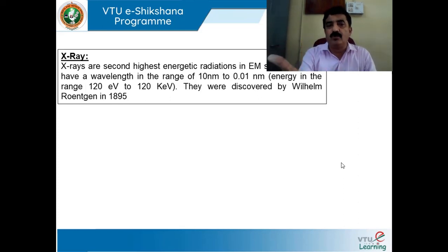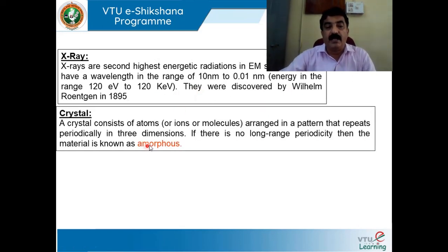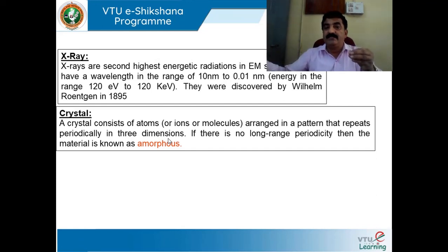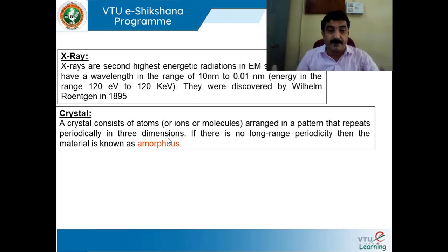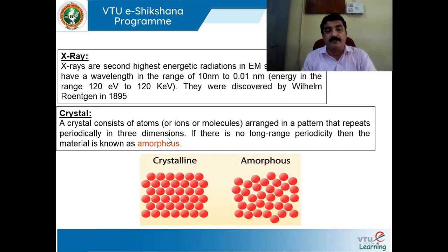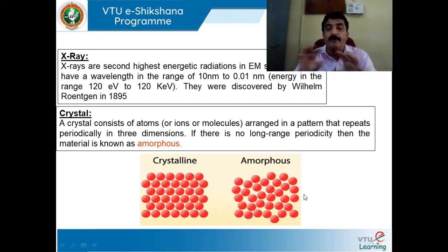First, a brief explanation of X-ray: X-ray is the second highest energetic radiation, with wavelength in the range of 10 nanometers to 0.01 nanometers. They were discovered in 1895 by William Röntgen. Regarding crystals: a crystal consists of atoms arranged in a particular pattern that repeats periodically in three dimensions — along x, y, and z axes. If this periodicity exists, it is a crystal; if there is no periodicity, it is amorphous. In the crystalline diagram, atoms are arranged in a regular fashion, whereas in amorphous, atoms are not perfectly arranged — there is some haphazard order.